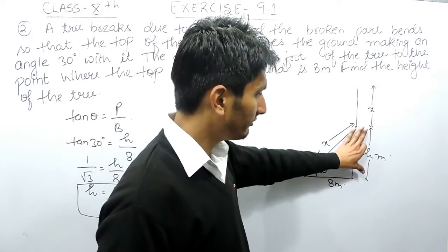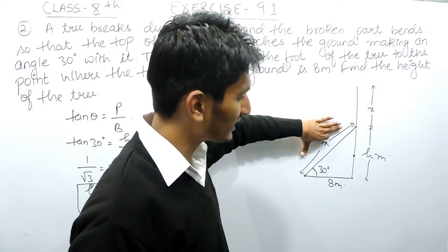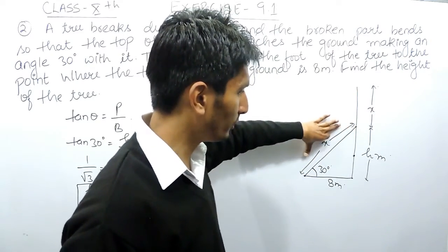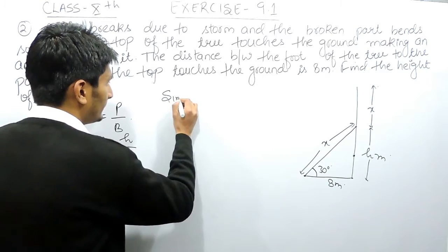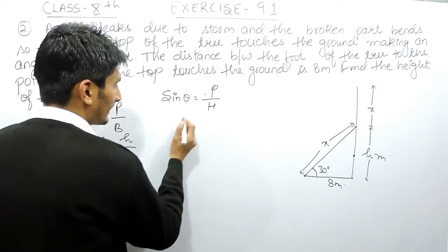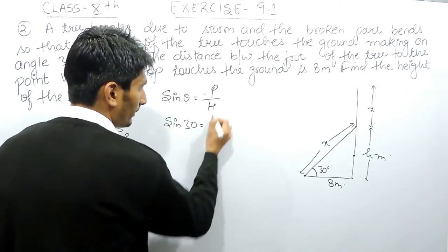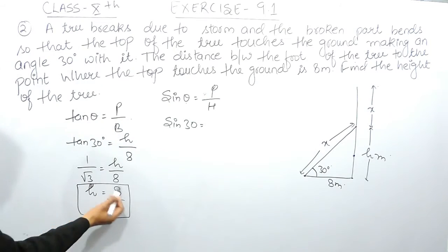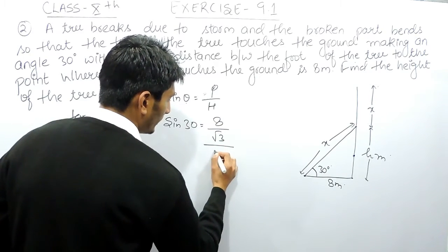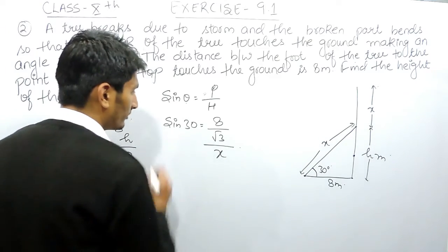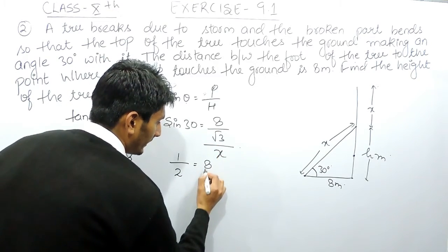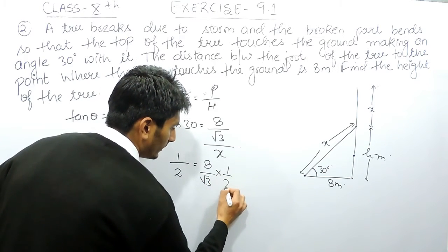Now I know the value of h and I have to find the hypotenuse. For that I use sin θ = perpendicular / hypotenuse. Theta is 30 degrees, and the perpendicular is 8/√3. I substitute these in: sin 30° = (8/√3) / x, where x is the hypotenuse in meters. The value of sin 30° is 1/2, so this gives (8/√3) / x = 1/2.